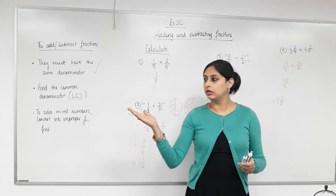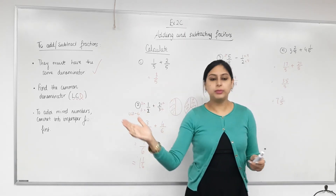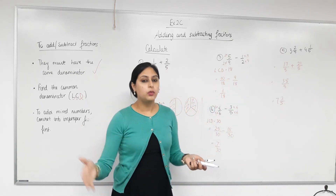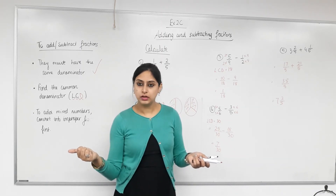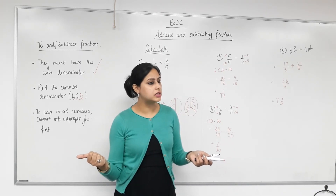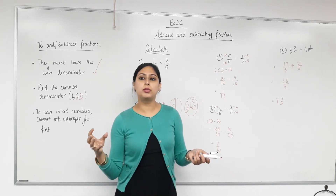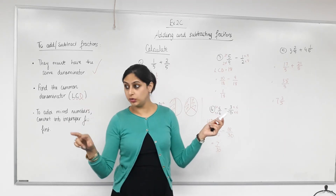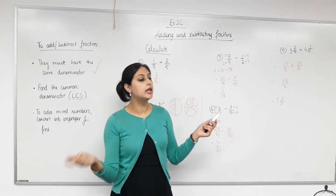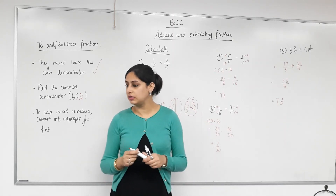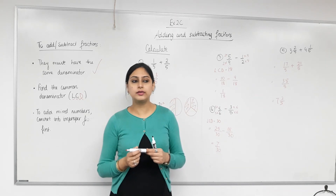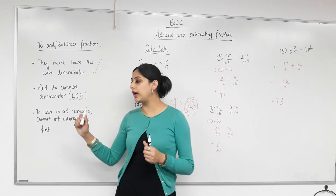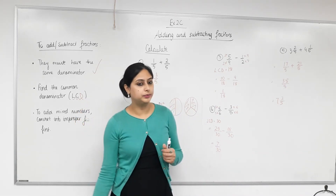So to summarize: what's the first thing we do when we add or subtract fractions? We need a common denominator. To find the same denominator, we find the LCM of the two denominators. Do we convert the final answer into a mixed number? Yes. And what do we do with mixed numbers before adding? We convert them to improper fractions first.